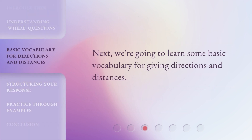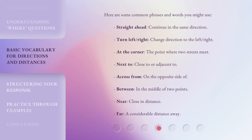Next, we're going to learn some basic vocabulary for giving directions and distances. Here are some common phrases and words you might use: 'Straight ahead' — continue in the same direction. 'Turn left' or 'right' — change direction to the left or right. 'At the corner' — the point where two streets meet. 'Next to' — close to or adjacent to. 'Across from' — on the opposite side of. 'Between' — in the middle of two points. 'Near' — close in distance. 'Far' — a considerable distance away.